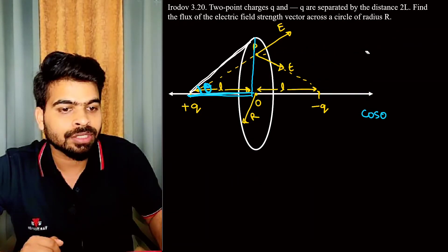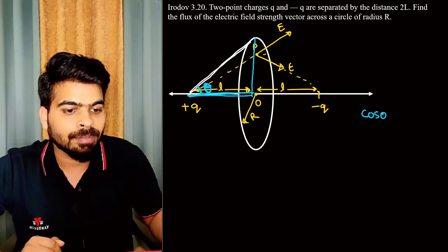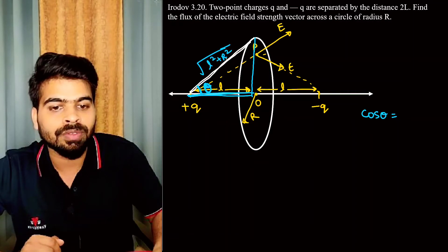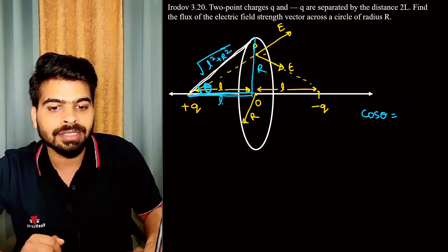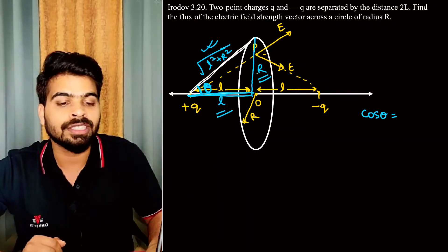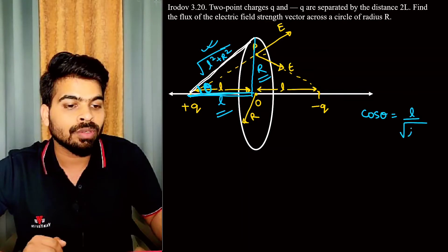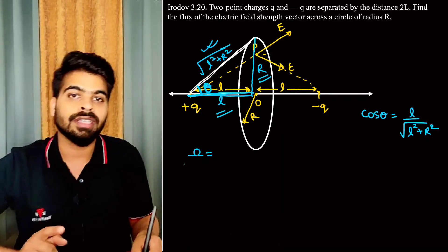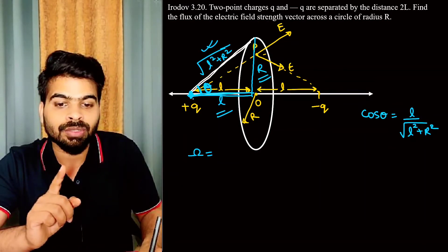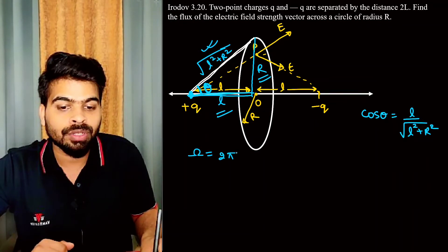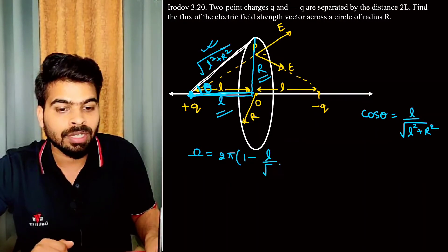This length is root over (l squared plus r squared). So cos theta equals l divided by root over (l squared plus r squared). The solid angle is 2π times (1 minus cos theta), which gives 2π times (1 minus l over root over (l squared plus r squared)).